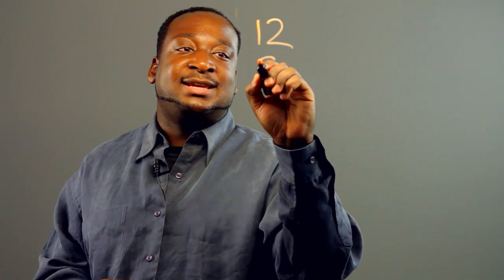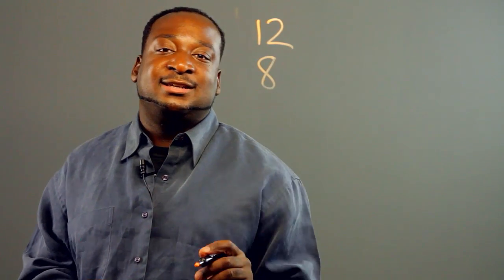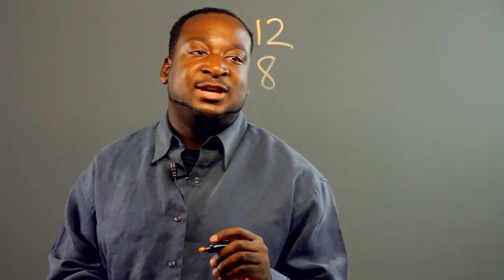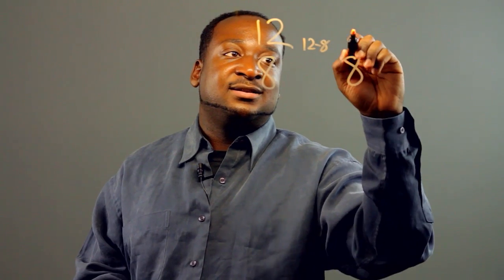Let's say we have two numbers, 12 and 8. In this algorithm, we keep the smaller number and subtract it from the larger number, so 12 minus 8, we get 4.